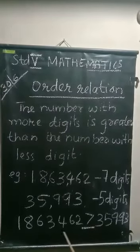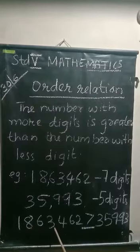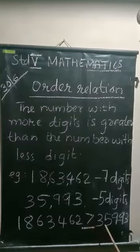And we can write this using the symbol like this. And how can you read this? 18,63,462 is greater than 35,993. Understood?